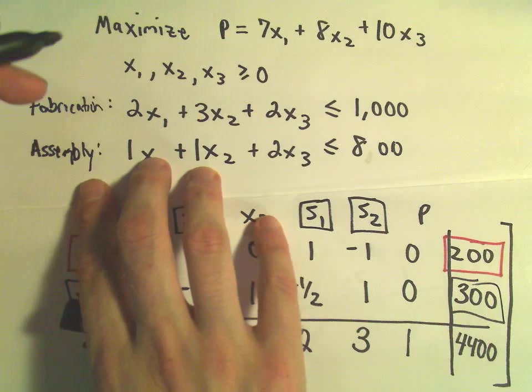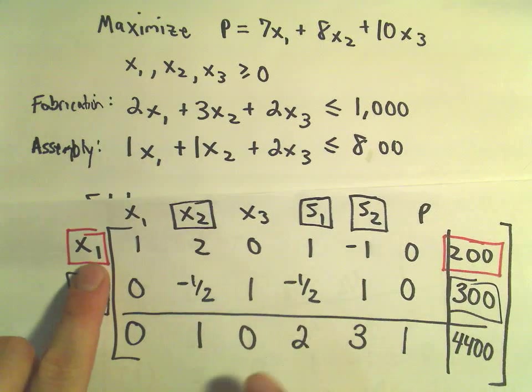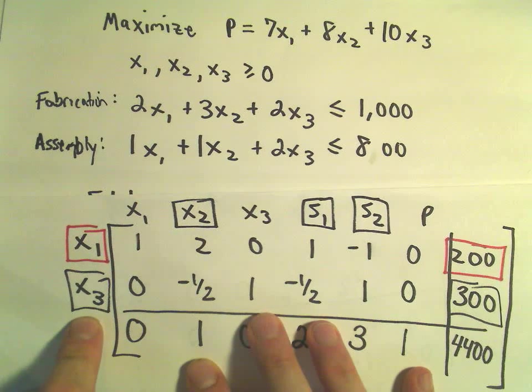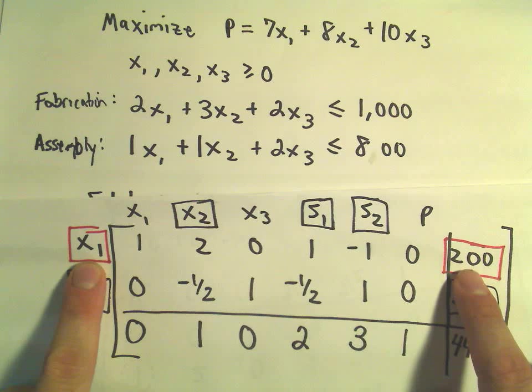To get our answer, you look at the variables on the left-hand side. This is why it's very important to switch them out. You set it equal to the values on the right.